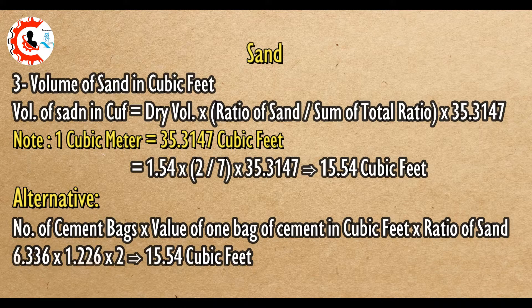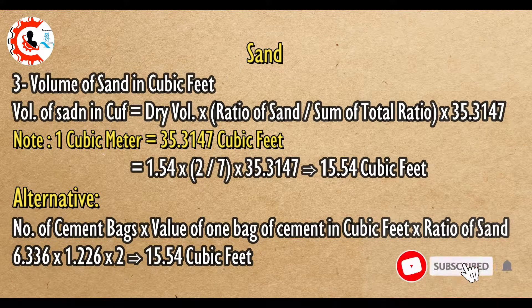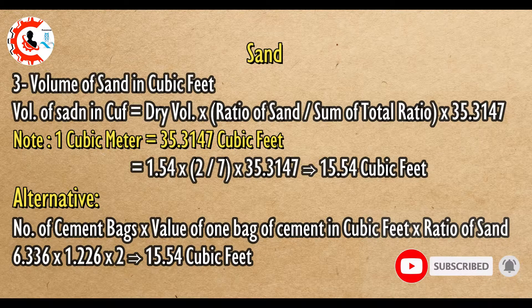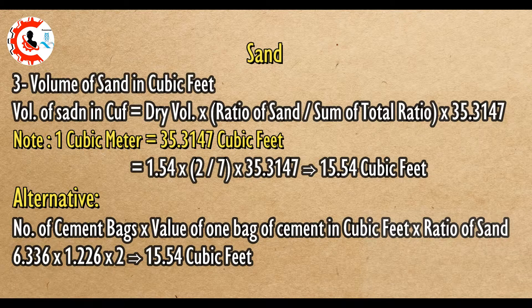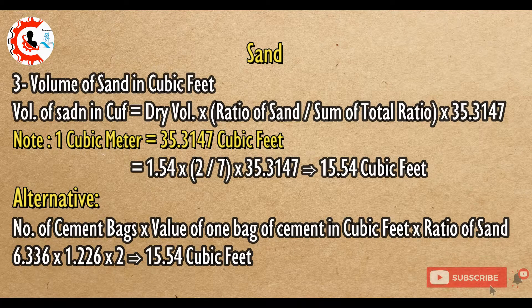Volume of sand in cubic feet equals dry volume multiplied by ratio of sand divided by sum of total ratio, multiplied by 35.3147. Note: 1 cubic meter equals 35.3147 cubic feet. 1.54 × (2/7) × 35.3147 equals 15.54 cubic feet.